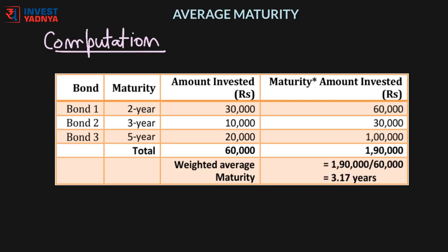Consider a case where a debt fund holds 3 bonds, each having a maturity of 2 years, 3 years, and 5 years respectively. The amount invested in the 2-year bond is Rs 30,000; in the 3-year bond is Rs 10,000; and in the 5-year bond is Rs 20,000. First, multiply the invested amount with the corresponding maturity period, then divide the total product by the total amount invested to arrive at the average maturity of the debt fund — that is 3.17 years in this example.